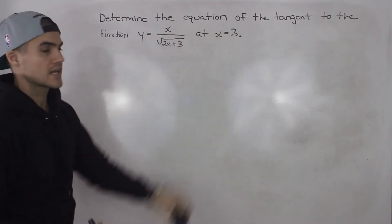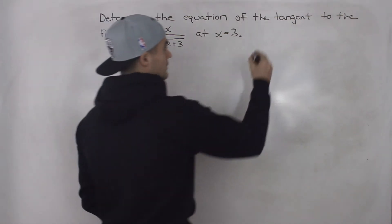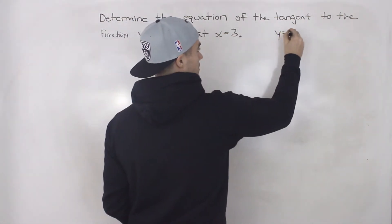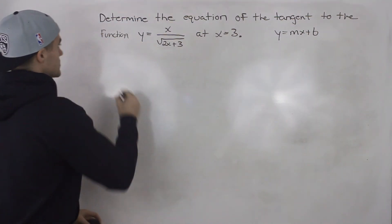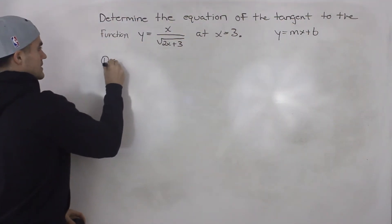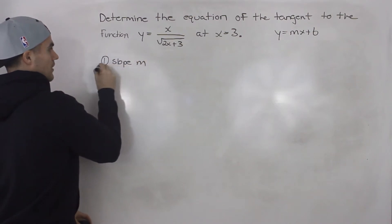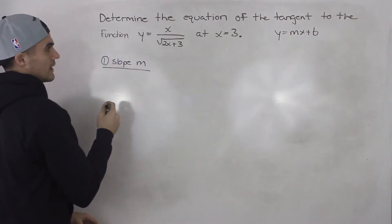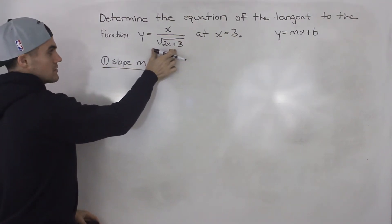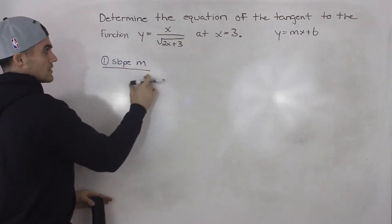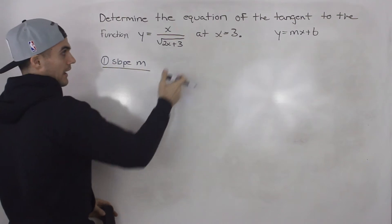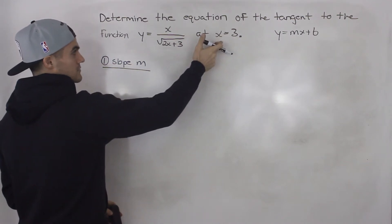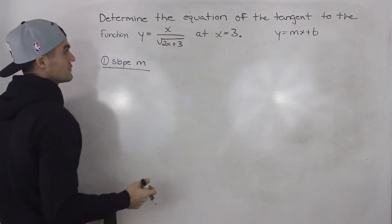Whenever you're finding the equation of the tangent, tangent is always a line, so you know your final answer has to be in y equals mx plus b form. So the first step is let's find the slope m of the tangent line. To find the slope m, we have to take the derivative of this function, because the derivative is going to give us a general expression for any slope at any x value, and then we're just going to plug in our x value of 3 to get our specific slope.